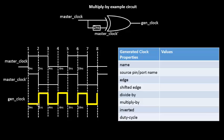Now let's calculate the period of this output waveform. One clock cycle of the generated clock spans from edge at 2ns to edge at 6ns, so the period is 6 minus 2 which equals 4 nanoseconds. Initially the master clock period was 8 nanoseconds, so 4 nanoseconds is half of 8 nanoseconds — that's why it's called a multiply-by circuit. The period gets divided and the clock frequency gets multiplied.